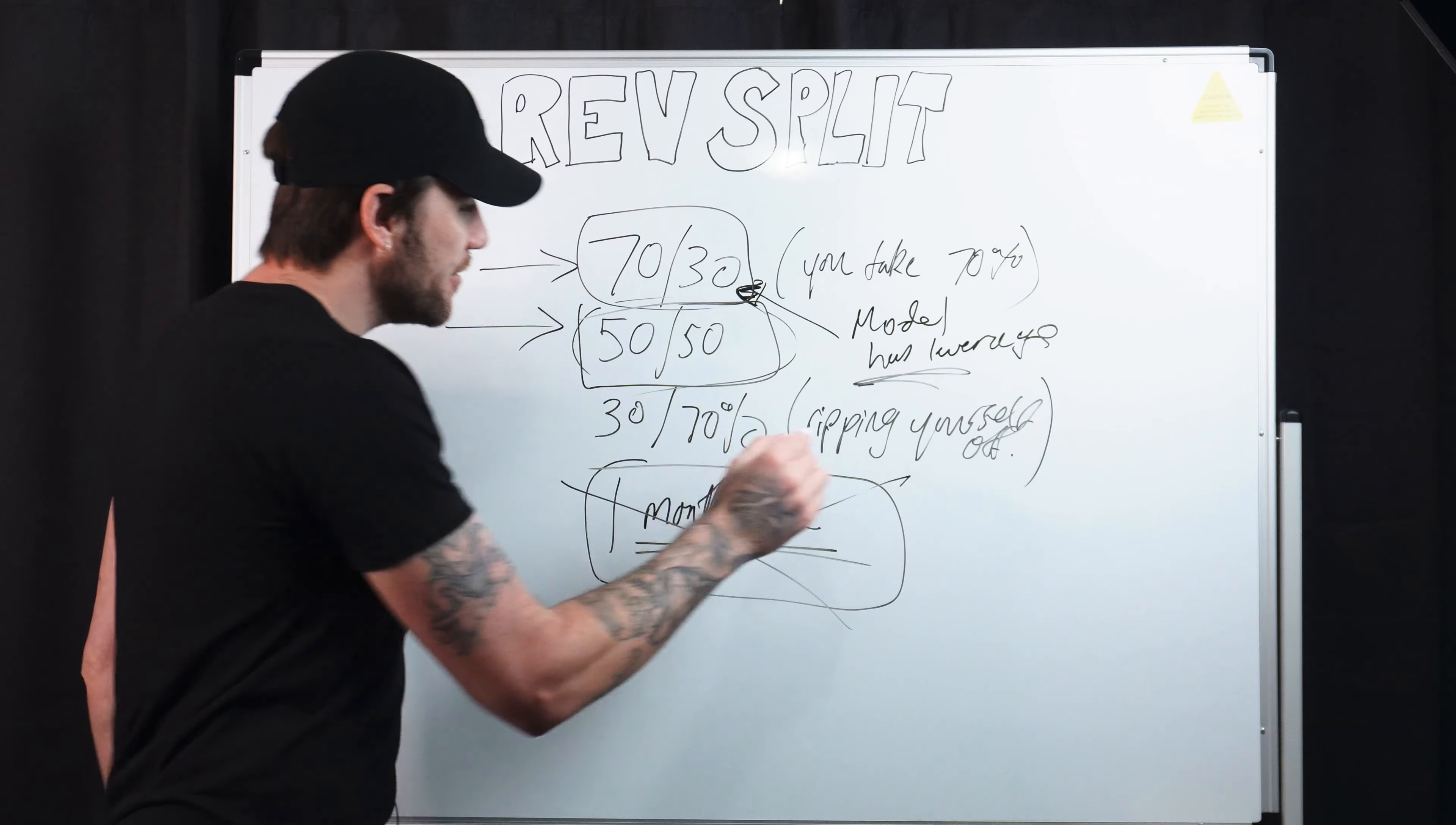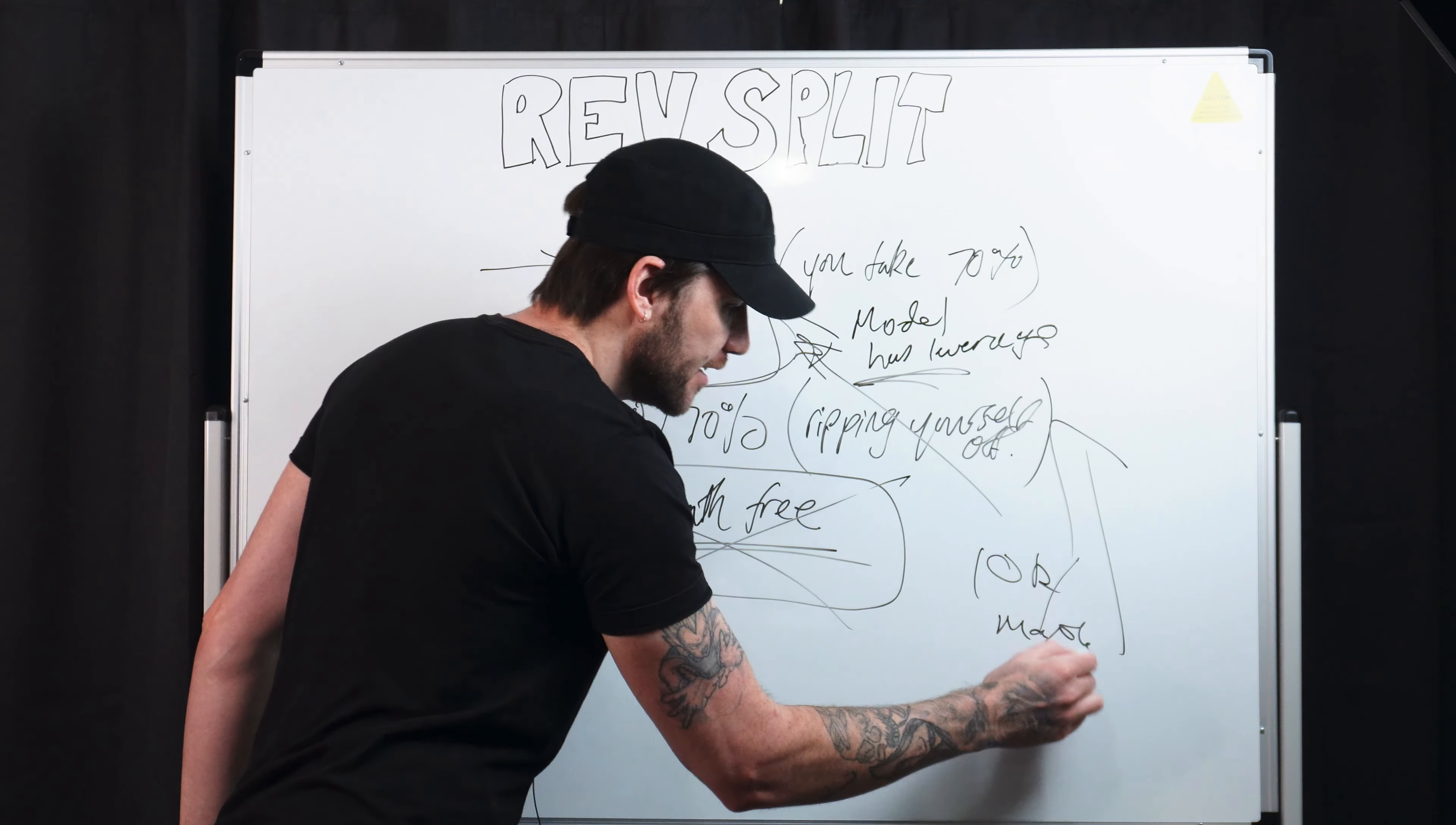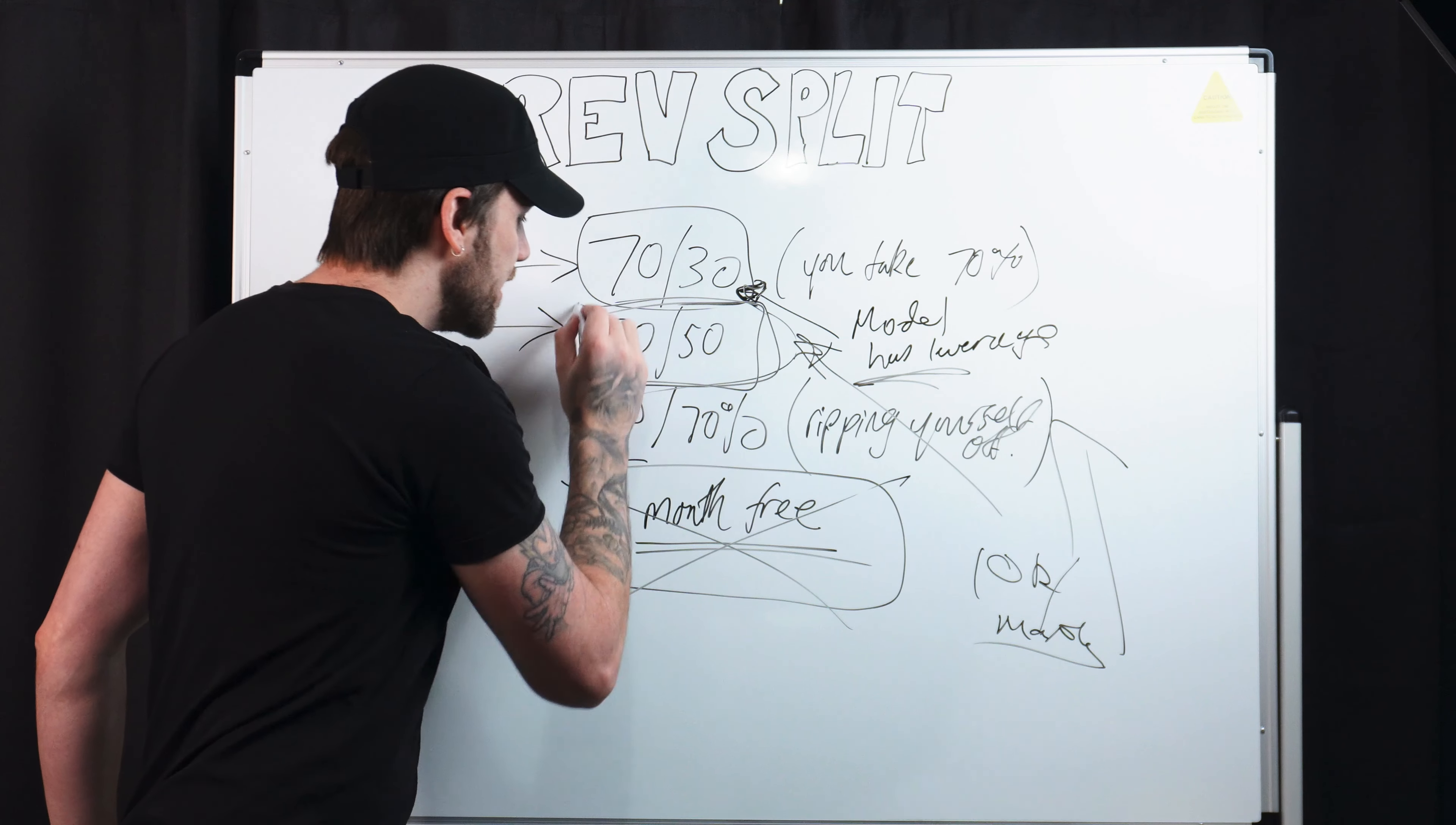So that leaves us on 50, 50. This is the revenue split that I propose. Now when you work your way up and you can make her 10K in the first month, then you are in a position to ask for 70, 30. But if you're watching this, I'm assuming you're not there yet. So that leaves us on 50, 50.